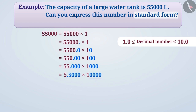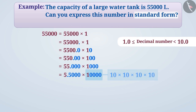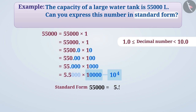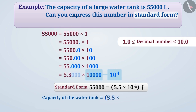We stop moving the decimal point as soon as we get the required value. Here, 10,000 has 4 zeros to the right of 1, which means 10 is multiplied by itself 4 times. Therefore, we can express 10,000 as 10 to the power of 4. Any zeros placed after the last non-zero digit after the decimal point have no value, so we ignore them. This gives us the standard form as 5.5 × 10 to the power of 4.